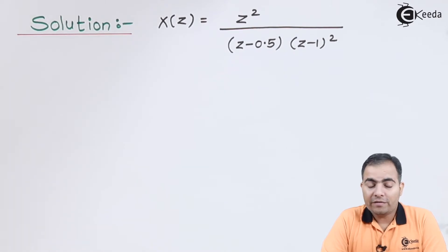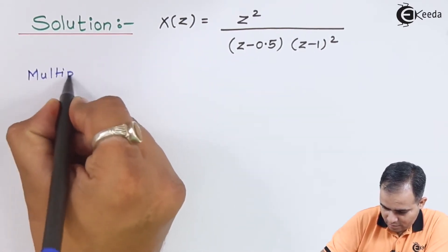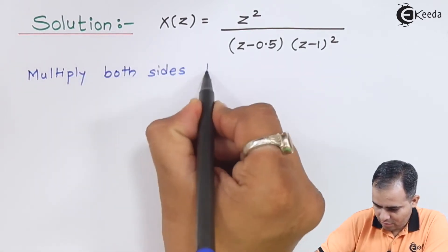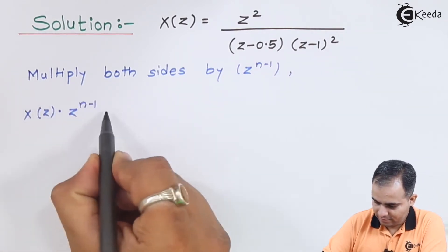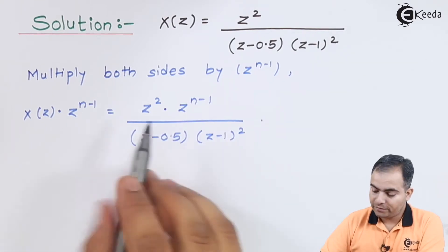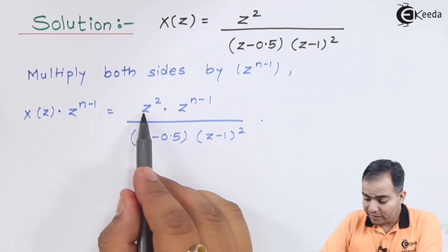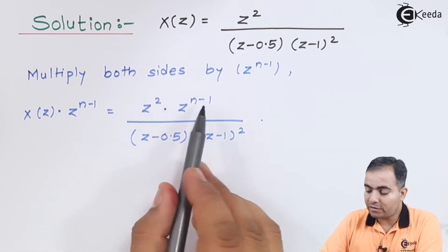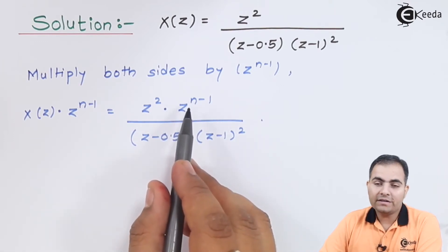While solving a problem based on the residue theorem, we will always multiply both sides by Z to the power n minus 1. On the right-hand side, the numerator has Z to the power 2, which is multiplied by Z to the power n minus 1. Since the bases are the same, the powers get added, so n minus 1 plus 2 gives n plus 1.